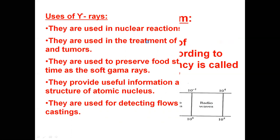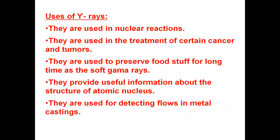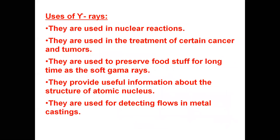To summarize the electromagnetic spectrum: we have gamma rays, X-rays, ultraviolet, visible, infrared rays, microwaves, and radio waves. All these electromagnetic waves share the same general properties but their uses are different depending on their wavelength and frequency. Uses depend on their wavelength and frequency.